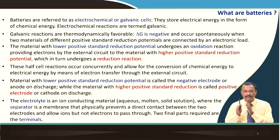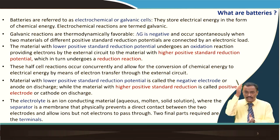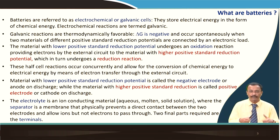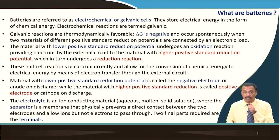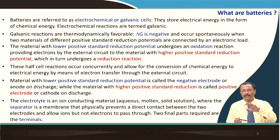The electrolyte is an ion-conducting material — it could be aqueous, molten, or a solid solution. The separator is a membrane that physically prevents direct contact between the two electrodes and allows ions but not electrons to pass through. The two final parts required for the formation of a battery are the two terminals.